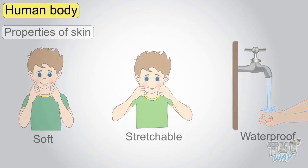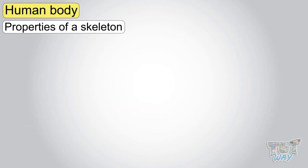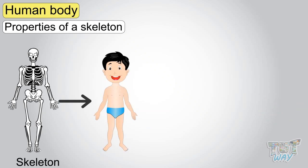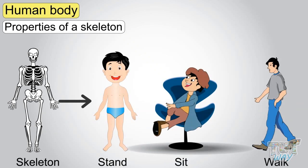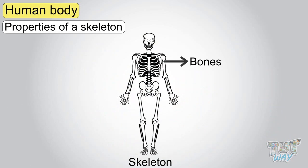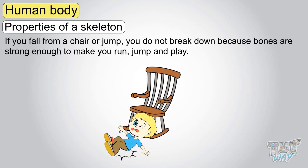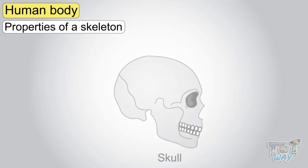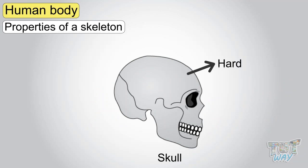Now let's see some properties of skeletons. Our skeleton is a frame that supports our body — we can stand, sit, and walk because of it. Our skeleton is made up of bones that are very hard and strong to provide us strength. If you fall from your chair or jump, you do not break down because bones are strong enough to make you run, jump, and play. Our skull is a hard structure, like a coconut, to protect the soft internal organ — the brain.